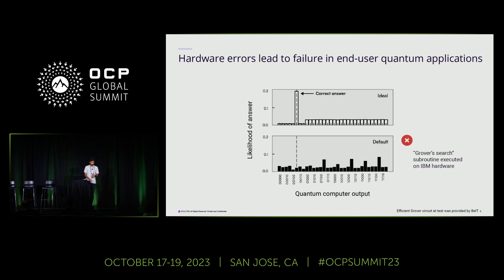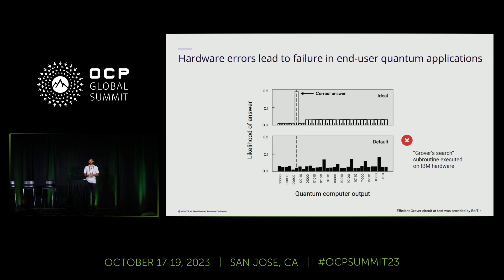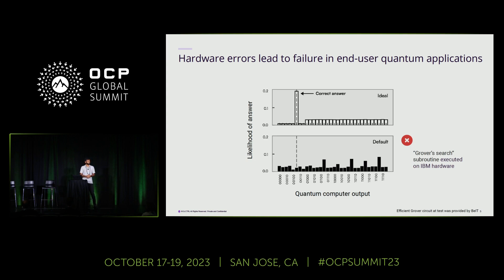To give you an example, consider this simple algorithm — a search algorithm in an unstructured array called Grover search. On the x-axis are different possible bit strings. On the top you see a simulation: if everything went right, when you measure it you should see the bit string marked by the dashed line with very high probability. On the bottom is an actual experimental run. This is a five-qubit algorithm — we've been talking about thousands of qubits — and you run it and you get pretty much noise. So then the question becomes: what happened to the benchmarks? All the numbers we keep talking about are very high, but when you run a simple algorithm, it's not working.